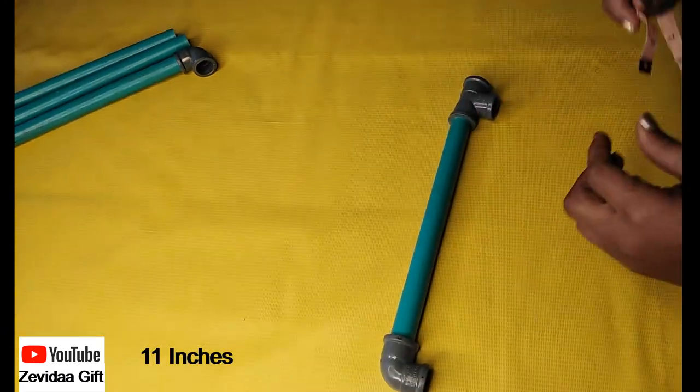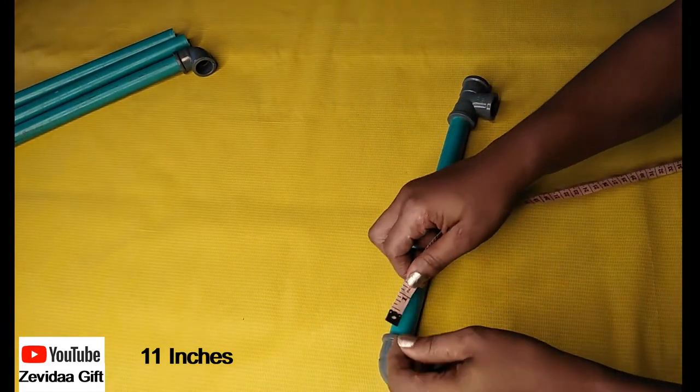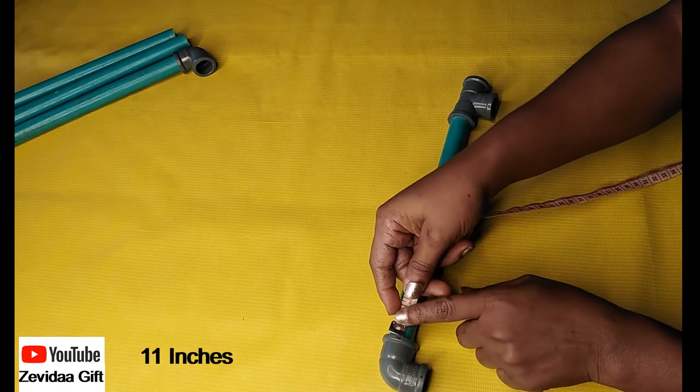Now the third one I'm picking is also measuring 11 inches and I inserted an elbow and a T-joint. Can you see that one has the shape of a T?